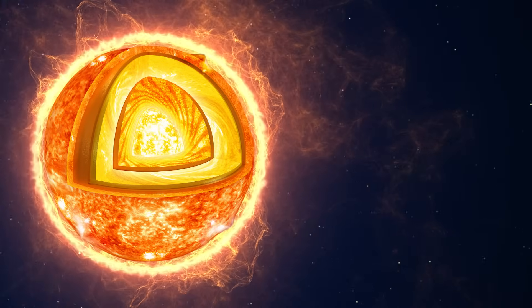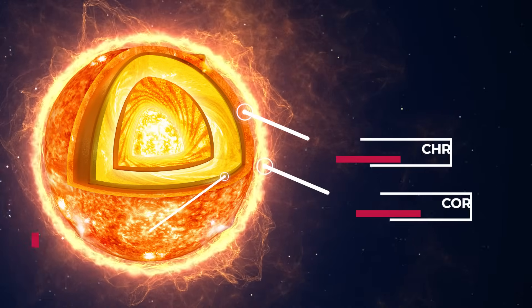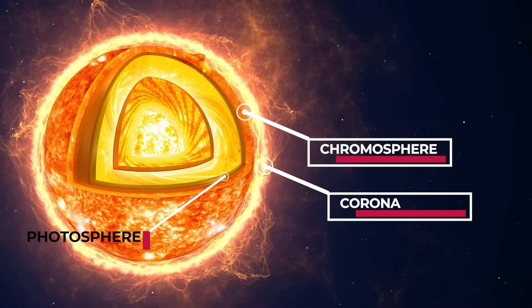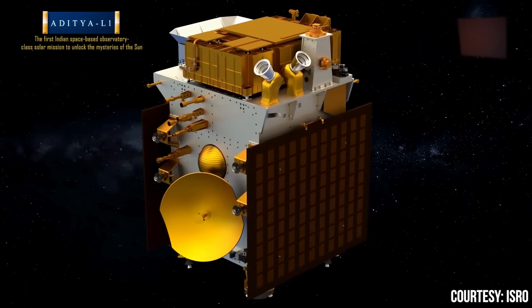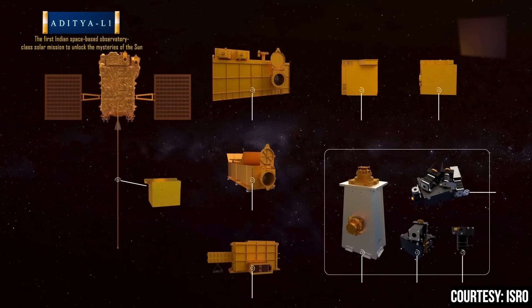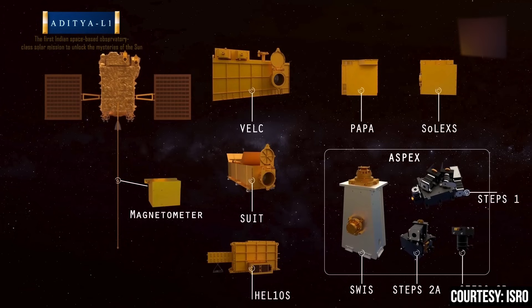One of the objectives of Aditya L1 mission is to study the outer layers of the sun, including the photosphere, chromosphere, and the corona. Aditya L1 is equipped with seven scientific instruments, commonly referred to as payloads. I will now provide you with a detailed explanation of these payloads.